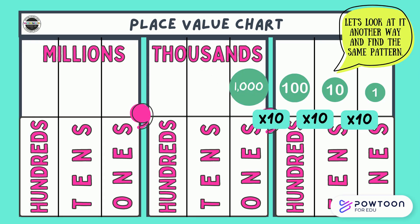Let's look at it another way and find the same pattern. Start over at the right side in the ones place. If we take 1 and 10 groups of that 1, we go over to the tens place and we have 10. Take 10, then 10 groups of 10, move to the left over to the hundreds place and we have 100. If we take 10 groups of 100, we get 1,000. Please pause the video and continue the pattern.